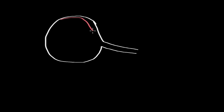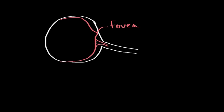The back of the eyeball is coated by a specialized membrane known as the retina. This dimpled portion of the retina is known as the fovea. The part of the retina directly in front of where the optic nerve exits the back of the eye is actually known as the blind spot. This is known as the blind spot because no photoreceptors are present in this area.